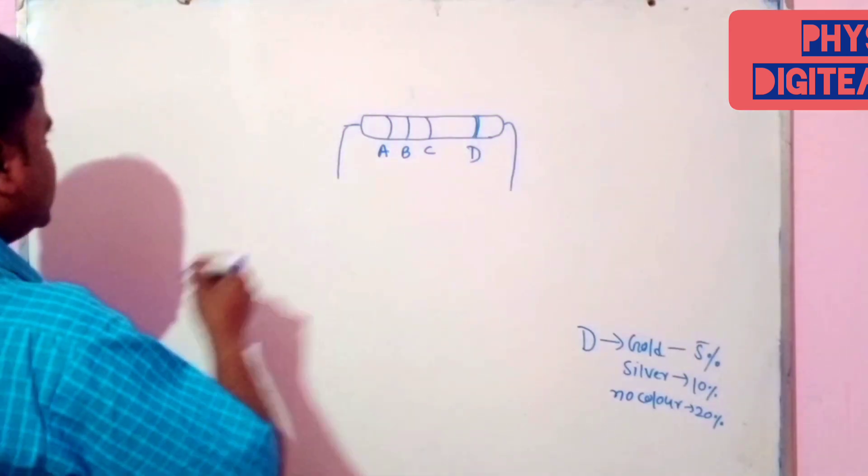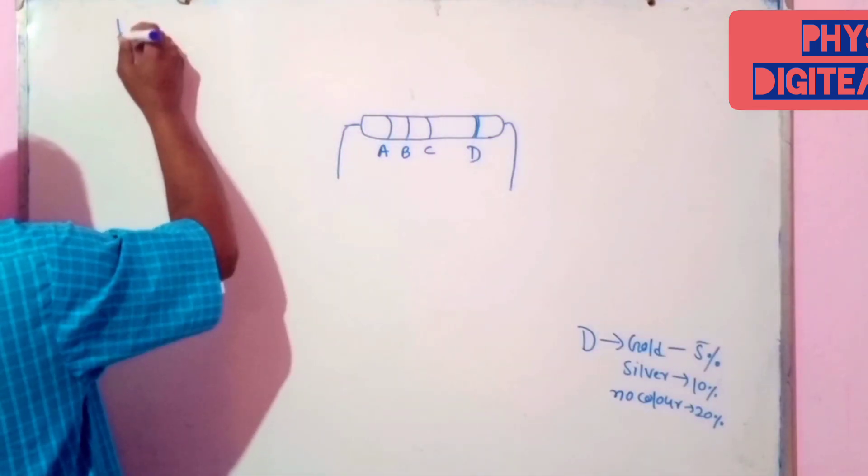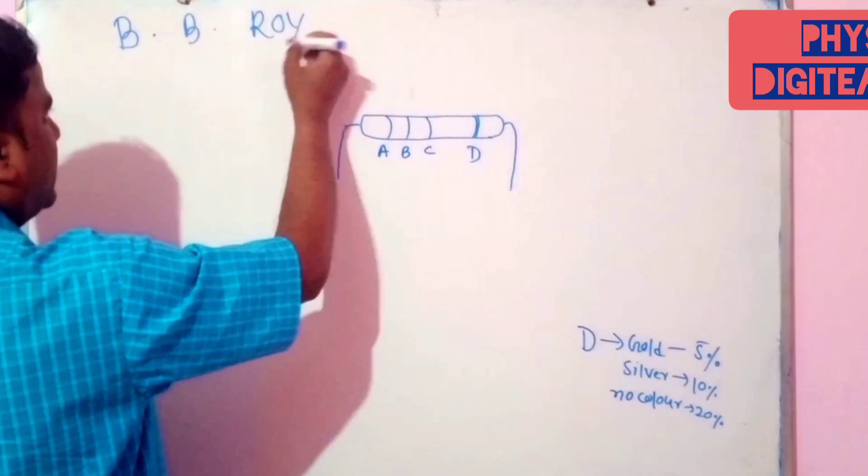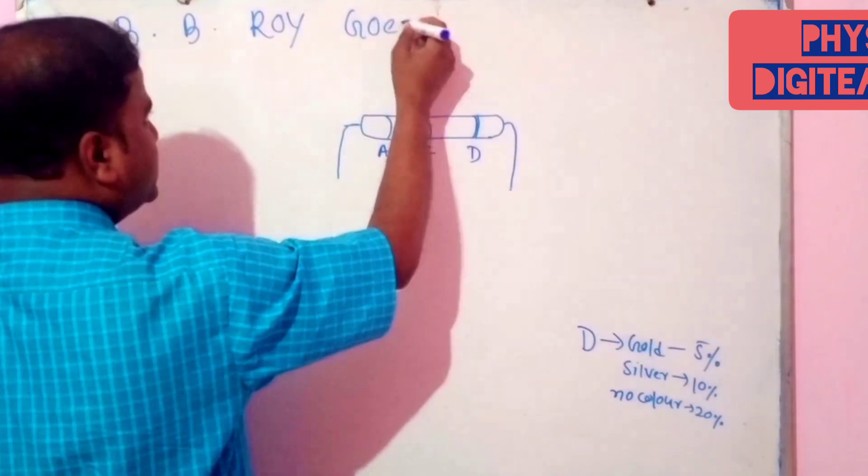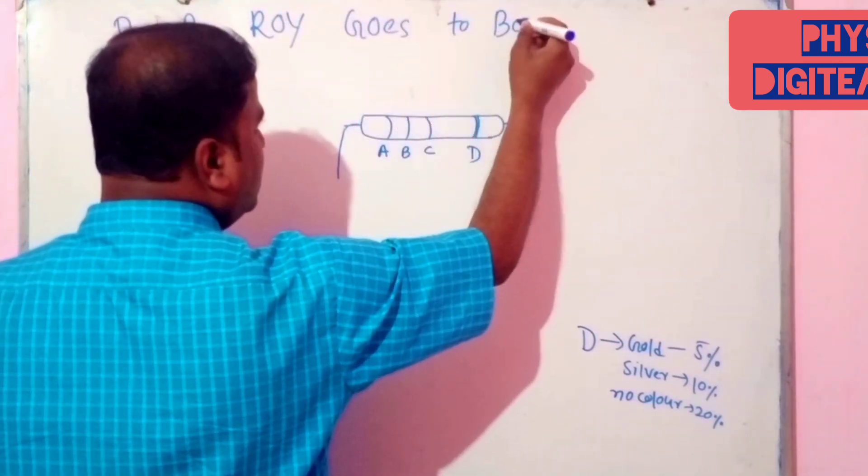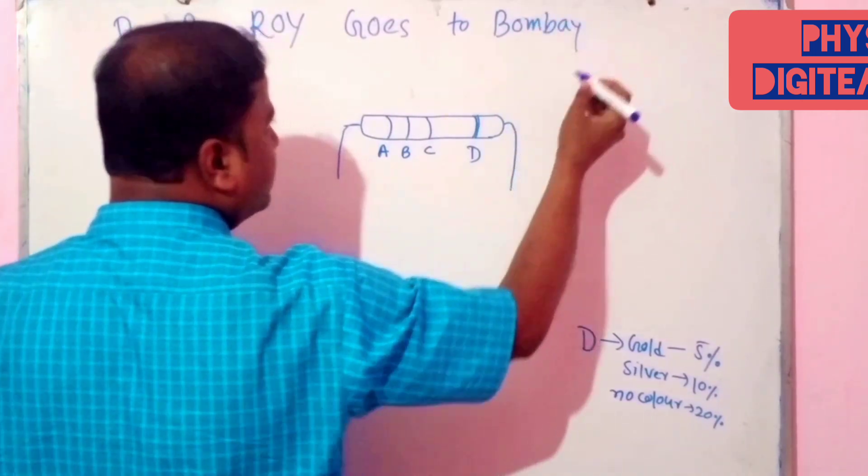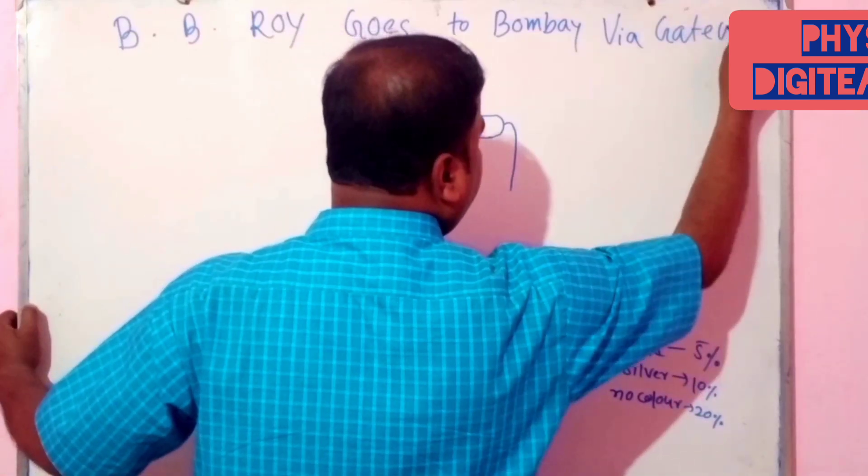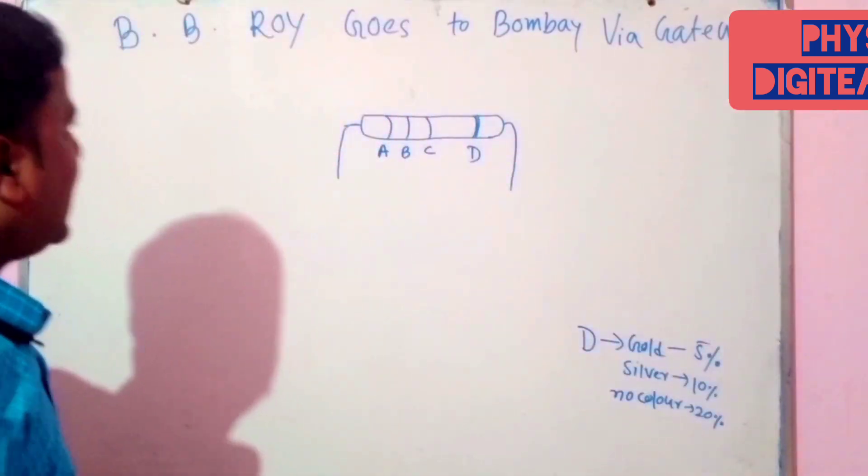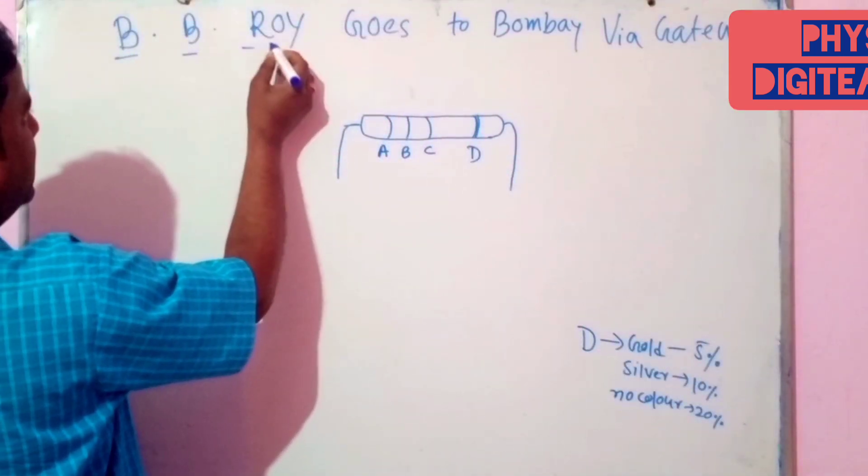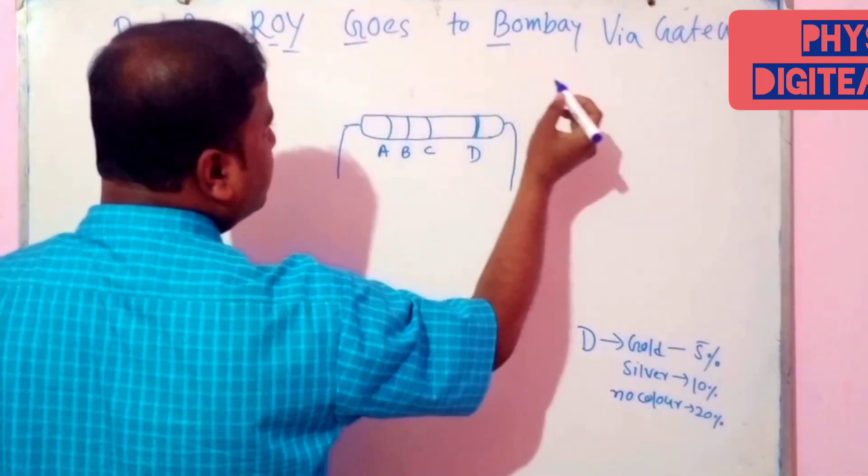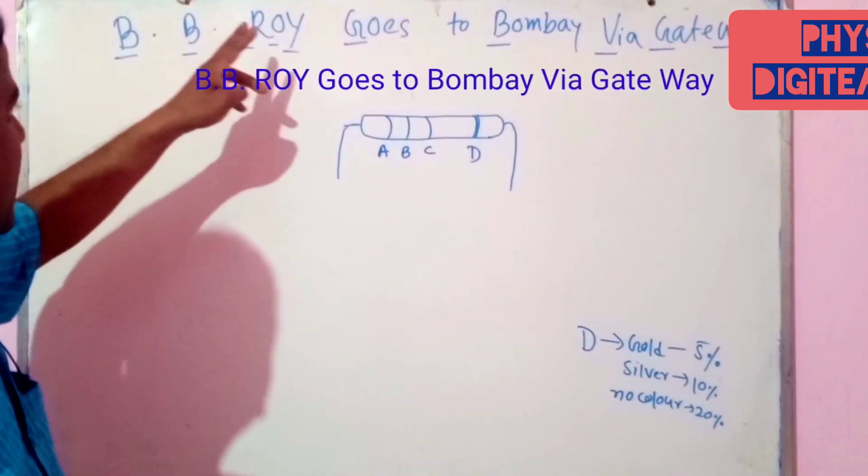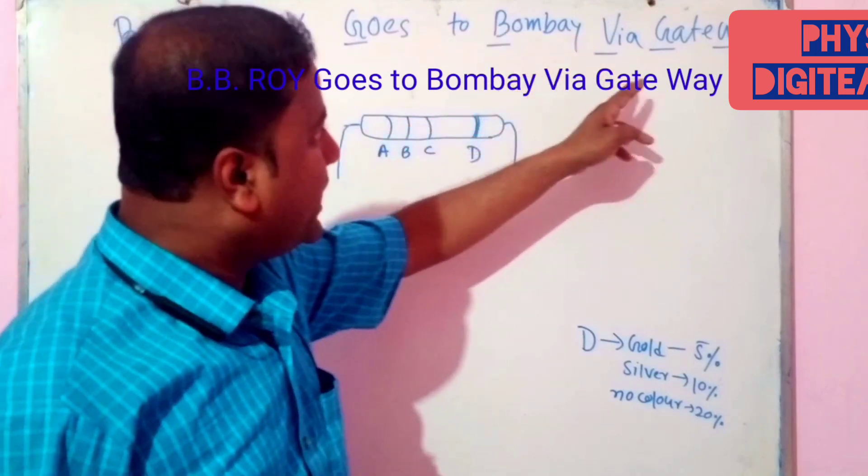And how to find out the resistance first? You have to memorize a mnemonic sentence. What is this sentence? This is B.B. Roy goes to Bombay via Gateway. Now, we make underline the capital letters. Again, I call B.B. Roy goes to Bombay via Gateway.